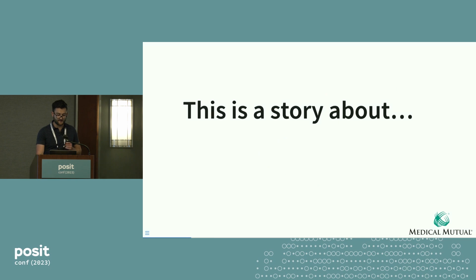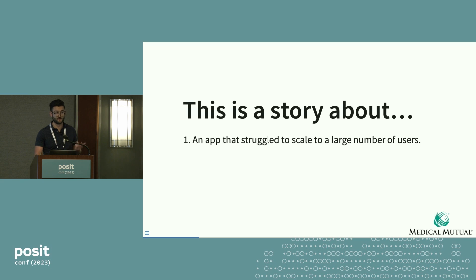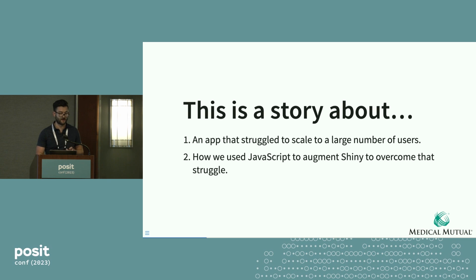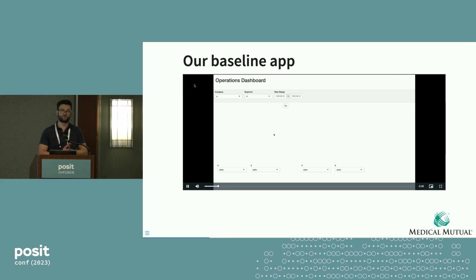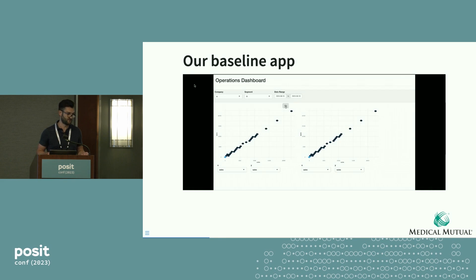So this talk is going to be a story about two things. One is going to be about a toy app that struggled to scale to a large number of users. And then we're also going to talk about how we use JavaScript to augment Shiny to overcome that struggle. This is the app we start with — a very simple Shiny application with two interactive hexbin plots. Simple, easy, and nice.